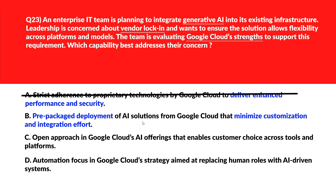Option B says pre-packaged deployment of AI solutions from Google Cloud that minimizes customization and integration effort. Pre-packaged deployment limits adaptability and reinforces vendor constraints — delete. Option C says an open approach in Google Cloud's AI offerings that enables customer choice across tools and platforms. An open approach supports flexibility and mitigates risk associated with vendor lock-in. We'll keep Option C.